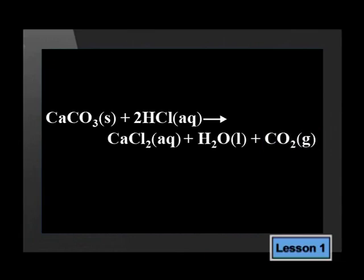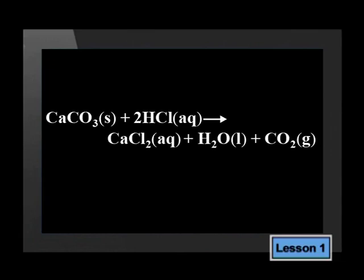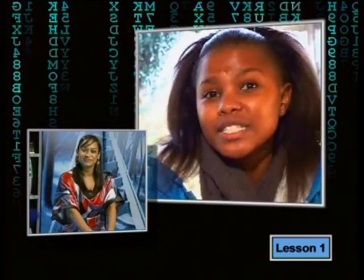How can we increase the rate of this reaction? If the calcium carbonate is a solid, we could increase the rate by crushing it into a powder to increase the surface area. Is there another way? Hydrochloric acid is in solution, so if we increase its concentration, we also increase the rate of reaction. There are two more ways: the rate will increase if we increase the temperature, or if we add a catalyst.